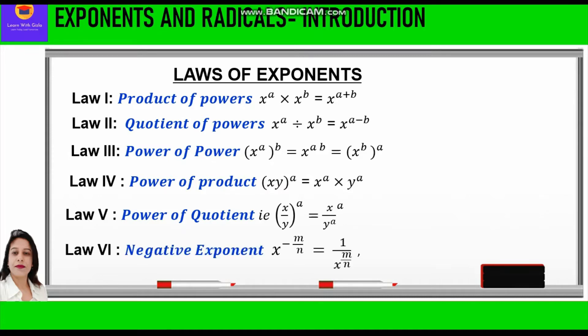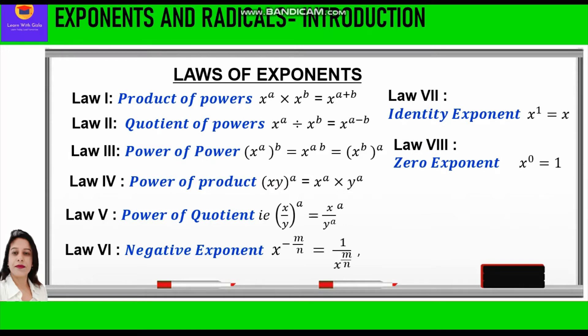The sixth law is the negative exponent, which says x raised to power minus m by n is equal to 1 upon x raised to power m by n. That means to make it positive, we just have to reciprocate the base. The seventh law is the identity exponent: x raised to power 1 is equal to x. The eighth law is the zero exponent: x raised to power 0 is equal to 1, meaning anything raised to power 0 is always 1.